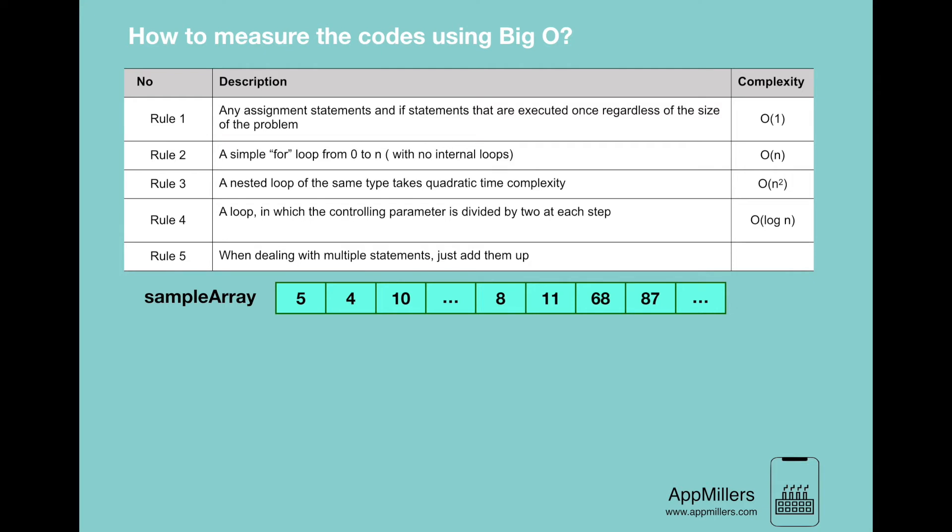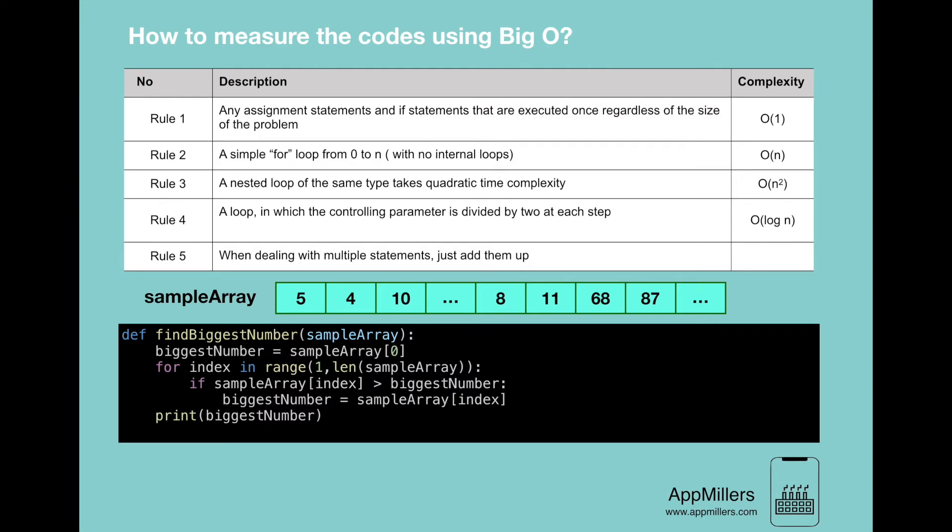A method to find the biggest number in a given array will be something like this in Python. Here the method takes this sample array as an input and then we declare a variable and assign this variable the first element of this list. Then we create a loop which starts from the second element till the last element of array.